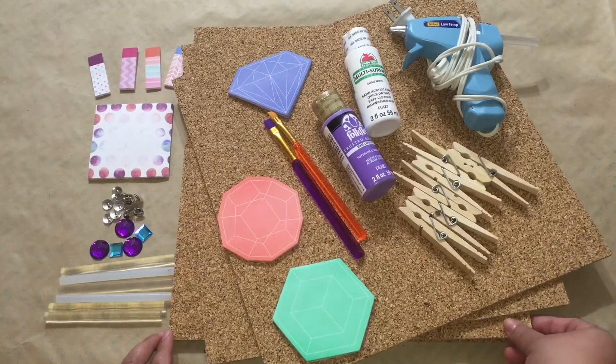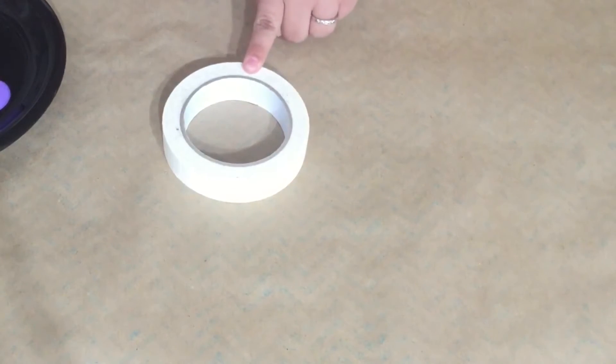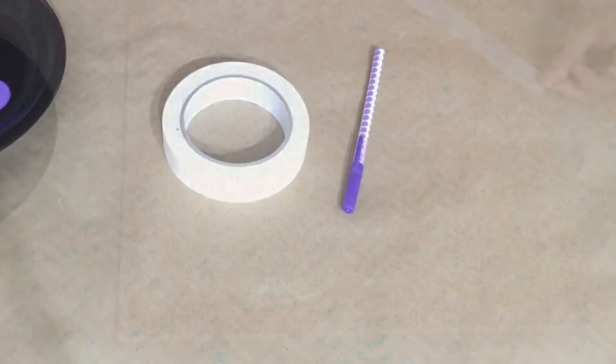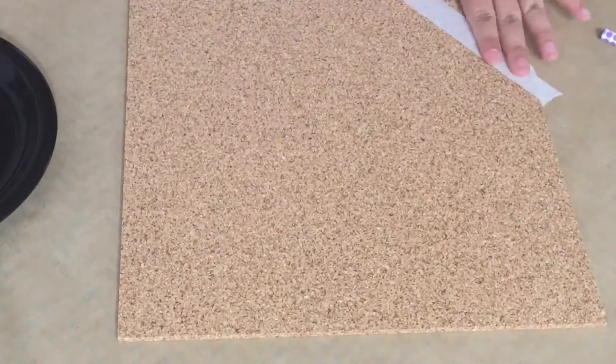A couple of supplies I forgot to mention are painters tape to tape off lines on the corkboard and a pen if you would like to draw your idea out first.